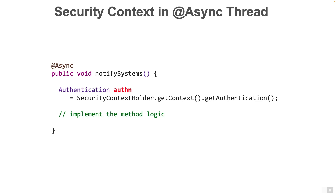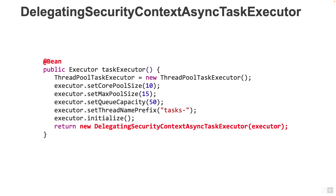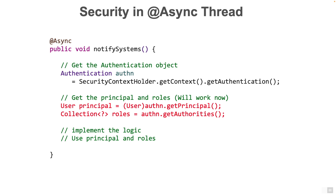But we would like to be able to access the securityContext from within the @Async method, as it definitely helps with any authorization we need to do in that thread. In order to propagate the securityContext to the thread which runs the async method, we should use the DelegatingSecurityContextAsyncTaskExecutor. With this simple change, the securityContext will be propagated to the async thread as well, and we can access the authentication object from the async thread just like we did before.